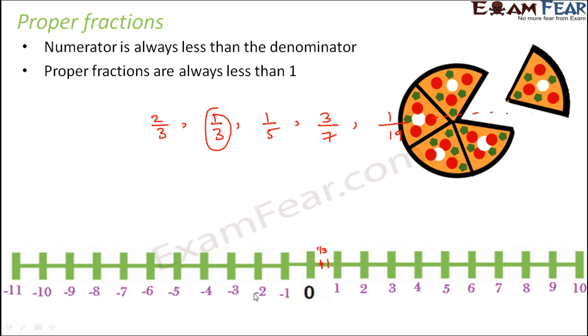Similarly, where will you locate 1 by 5? So again in that case, you will divide this block into 5 equal parts and again 1 by 5 would be located somewhere here. So there also it is located between 0 and 1. Now you will observe that whenever you have the numerator lesser than the denominator, that fraction will always be located before 1.